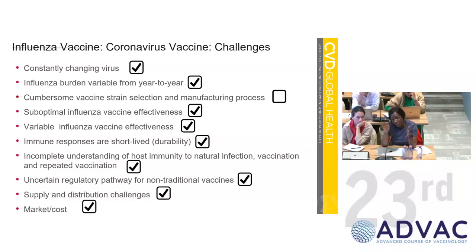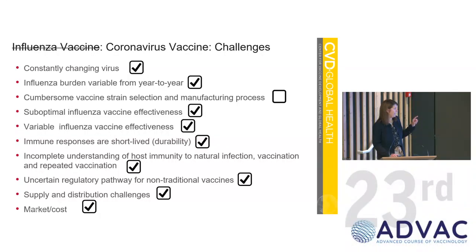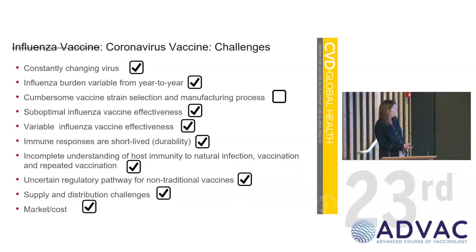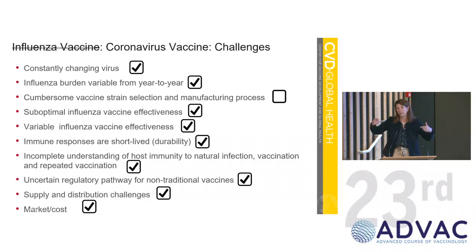Q: Did we see a change in the flu virus during the pandemic period — did the variant change, or was it the same strain circulating before and after? A: That's a really good question. The H3N2, which always changes, was a bit different. The others were the same. I don't know the answer at a molecular level, but it's a great question. The generic answer is really just based on whether the changes were enough that we had a strain change in the vaccine.